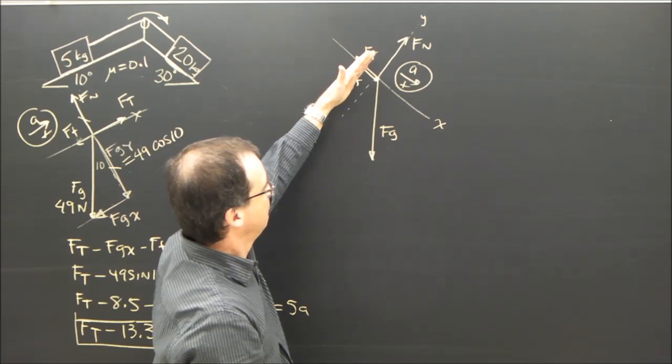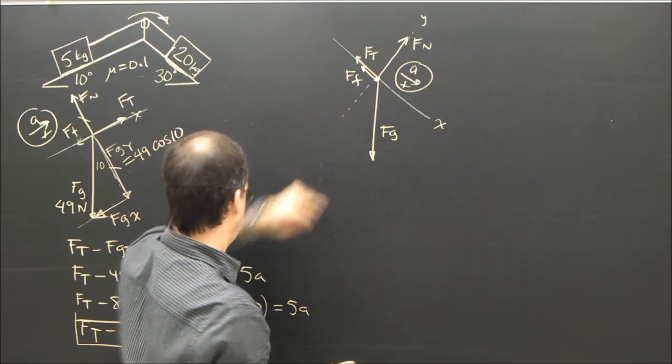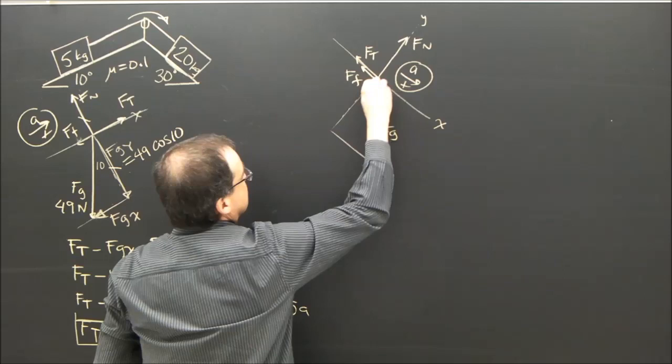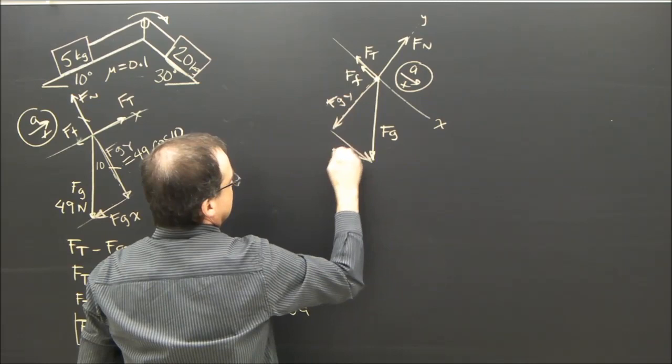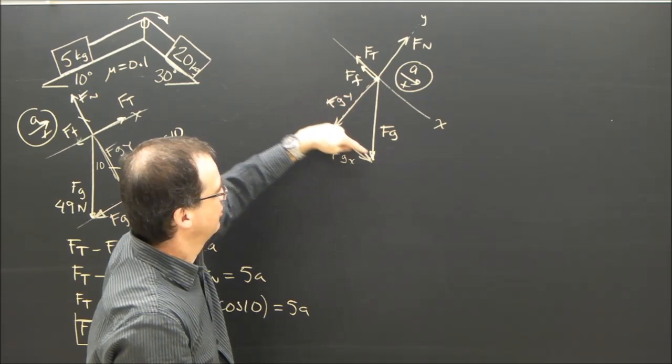Same situation as the last one. Since it's accelerating this way, I'm going to need components in this direction and this direction. I've got to break up fg. So I'm going to break up fg like this. It's a little bit in the y, fgy, and a little bit in the x. fg, x. Starts here, ends there, so it's down and to the right.